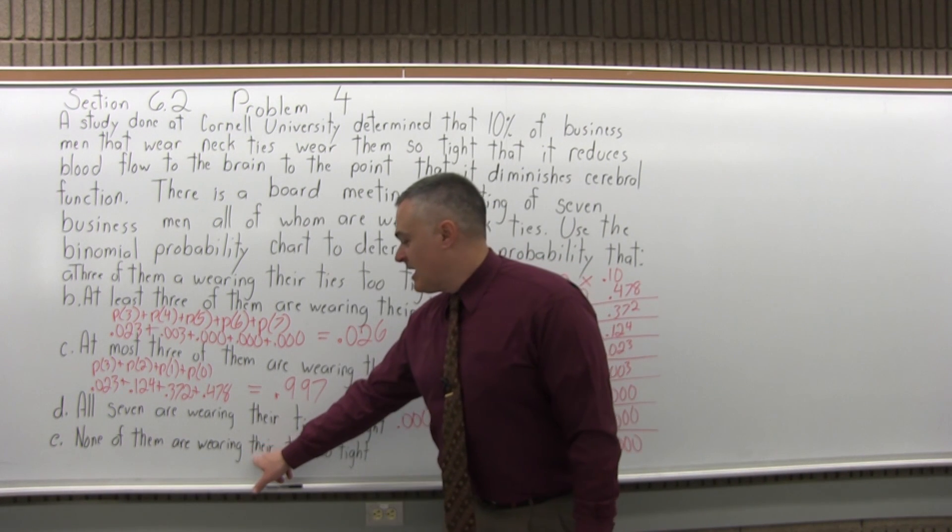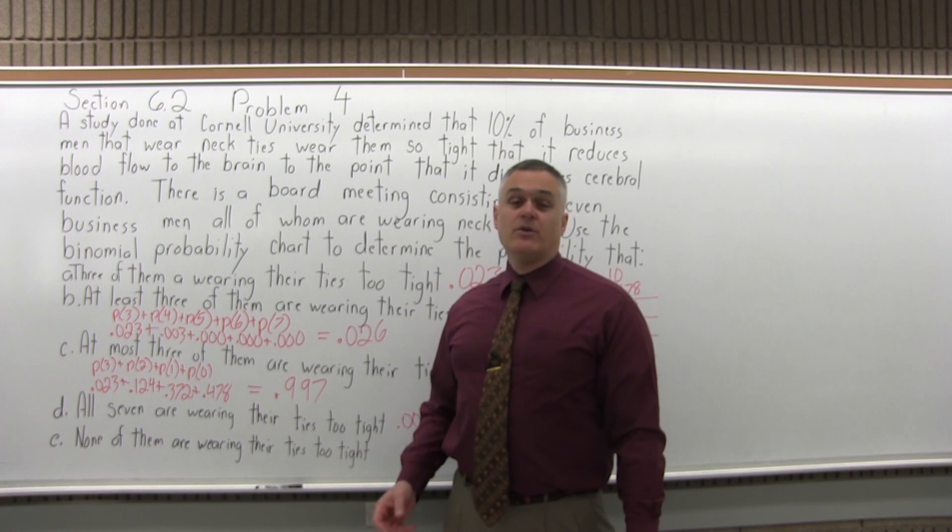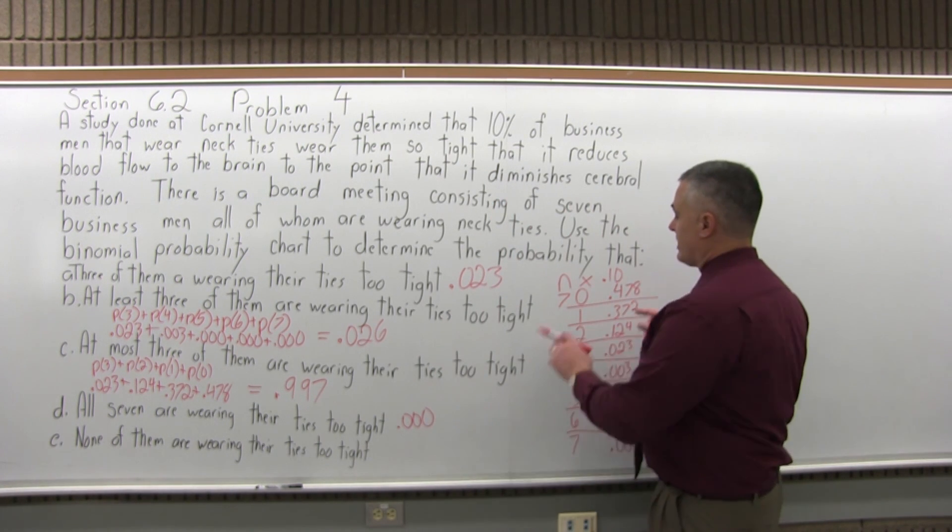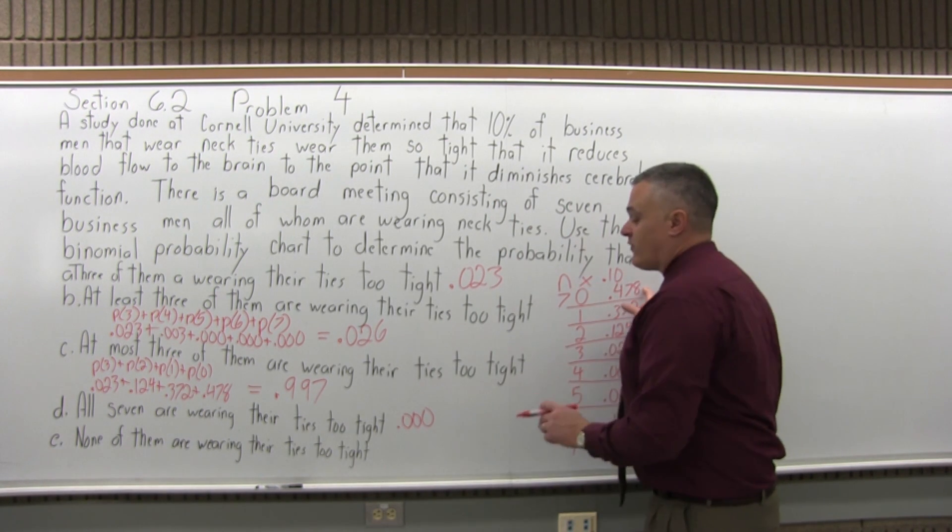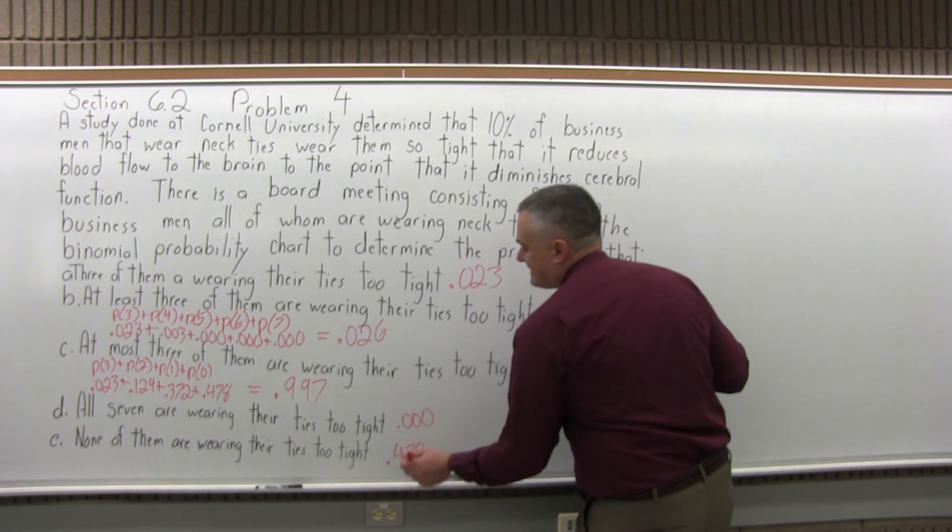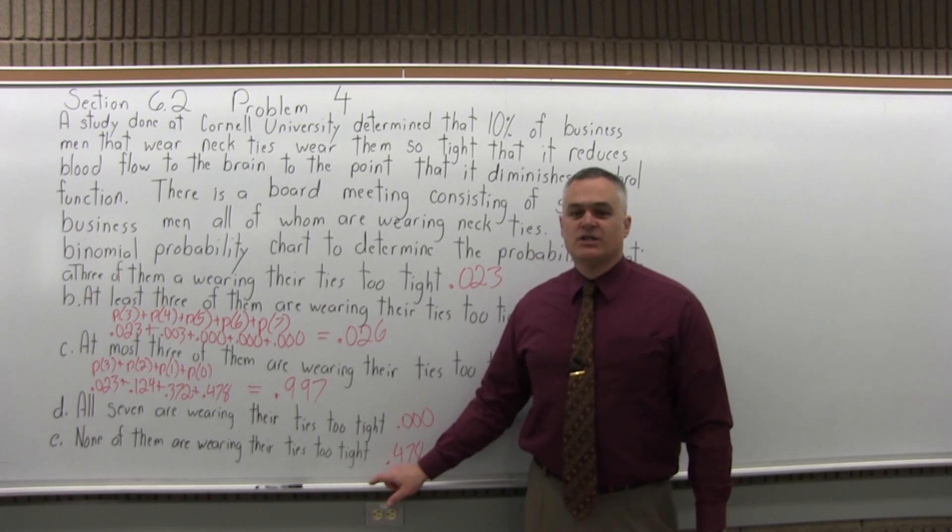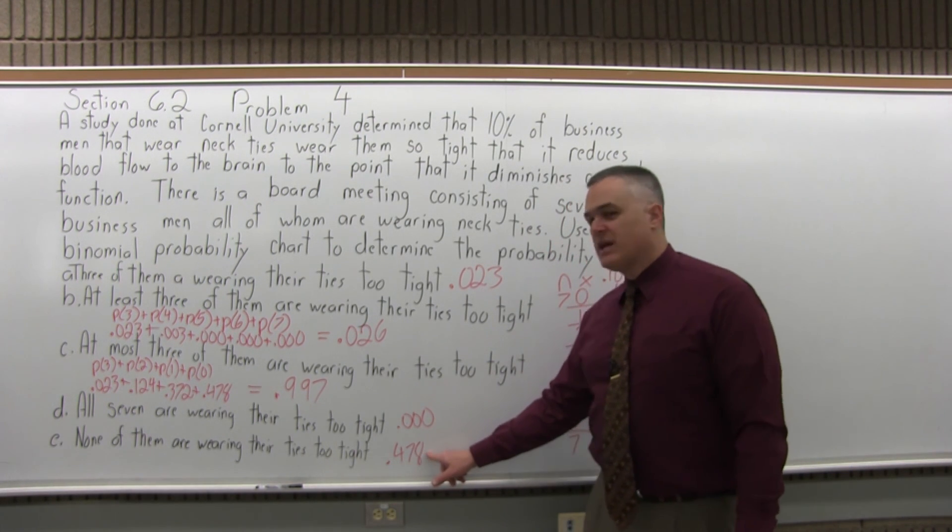And E, what's the probability that none of them are wearing their ties too tight? None would be zero. We go to the part of the chart next to zero, be .478. So in a group of seven, it's a little less than a 50% chance that none of them have their ties on too tight. Almost 48% probability.